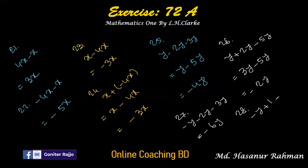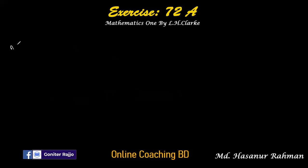Number twenty-eight: minus y plus minus 2y. Plus into minus is minus 2y. The signs of y and 2y are both negative, so we add: y plus 2y is 3y, and the answer is minus 3y.